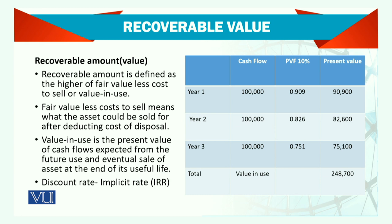We need to find out year by year how much cash is generated, and how much we collect at the end of the asset's life. Once you get these figures, you need to discount them. The discount rate is basically the market risk-free interest rate. There are 3 years with even cash flows and a present value at 10%, so you multiply and get the total value in use of 248,700.